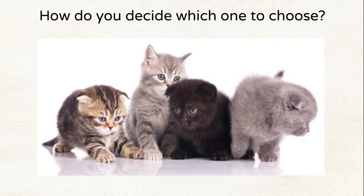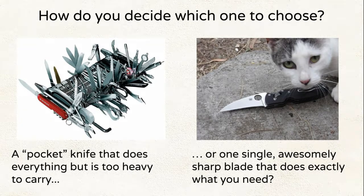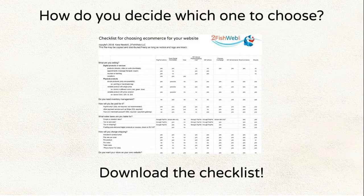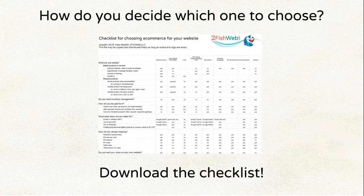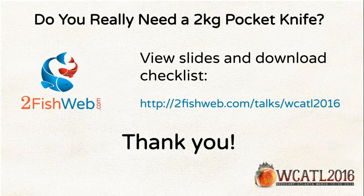How do you decide which one to choose? You've got all these options — 276 blades or one single sharp blade that does exactly what you want. That's where the checklist comes in. It lets you answer these questions, and depending on your yes or no answers, a little table will tell you which solutions to look at. The link is 2fishweb.com/talks/WCATL2016 — the slides and checklist are up there so you can download them right now.